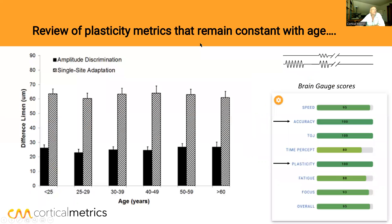Let's review the plasticity metrics that remain constant with age. In this study and many others, we collect amplitude discrimination values — asking which of two stimuli are larger. The better you are, the smaller the number. So the smaller the difference, the better, and that number gets much, much smaller.